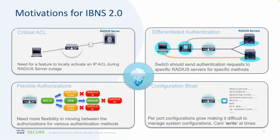From a motivations perspective, the critical ACL allows us to deal with a AAA failure — in the event the AAA server is unreachable, I get an ACL that allows certain types of access onto the network. Differentiated access allows me to authenticate to different RADIUS environments for different clients — my phones go to one system while my laptops might go to another. Flexible authorizations allows a policy that fails through gracefully, such as falling to a web auth page. Configuration bloat is addressed by using interface templates to reduce the massive config that would otherwise live on the device.